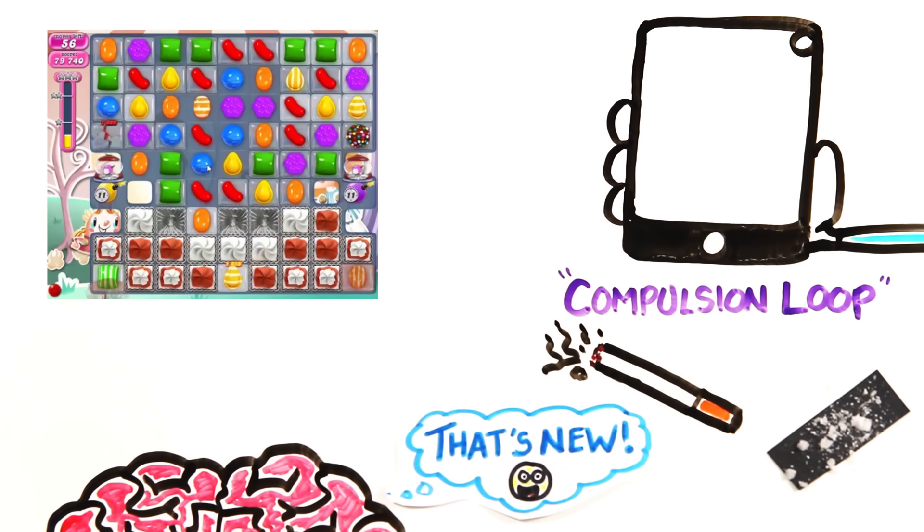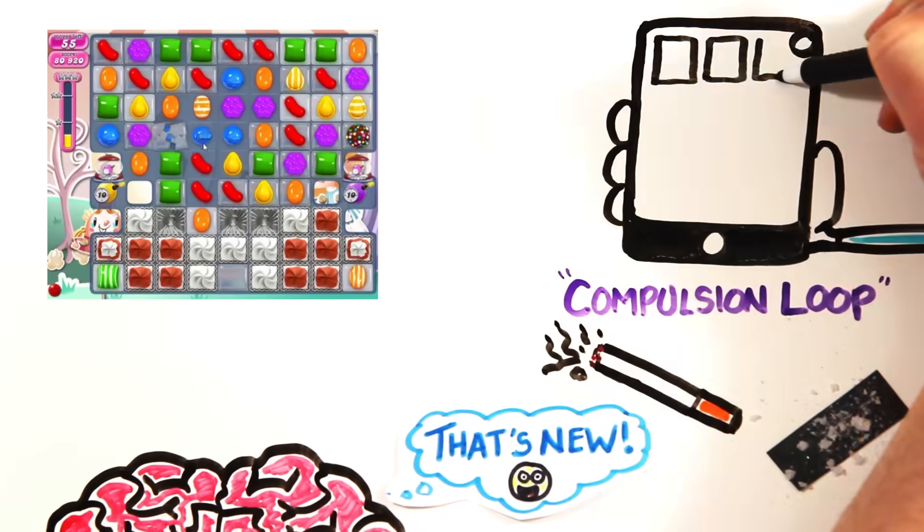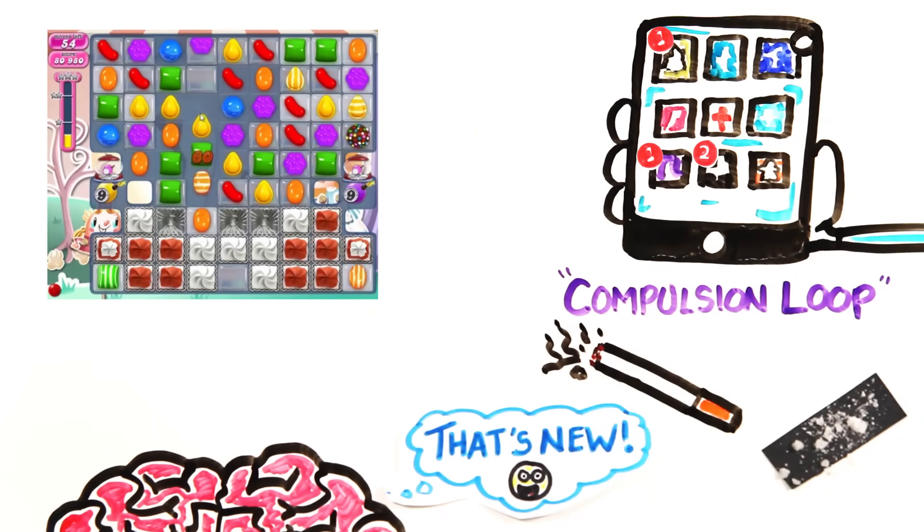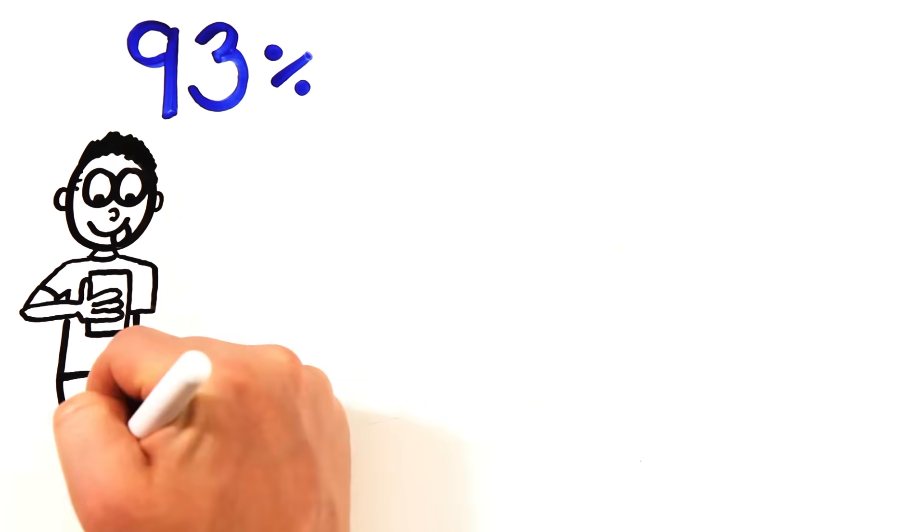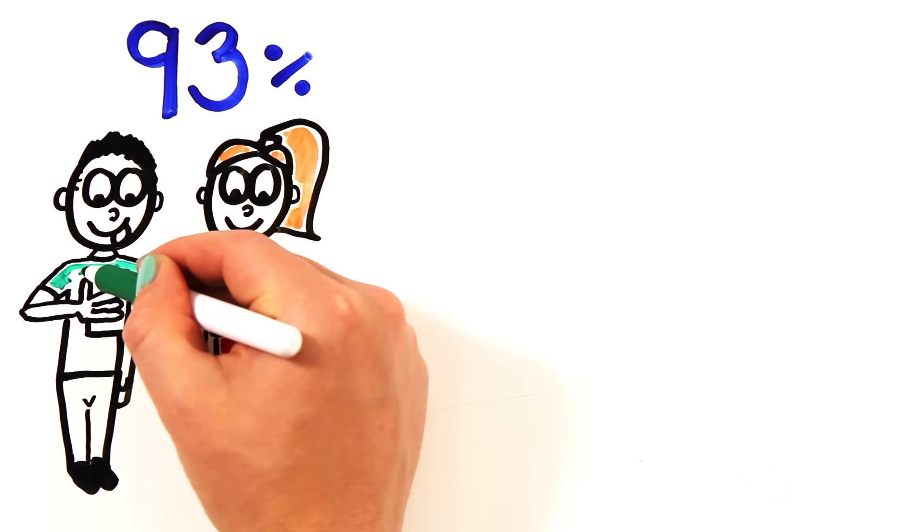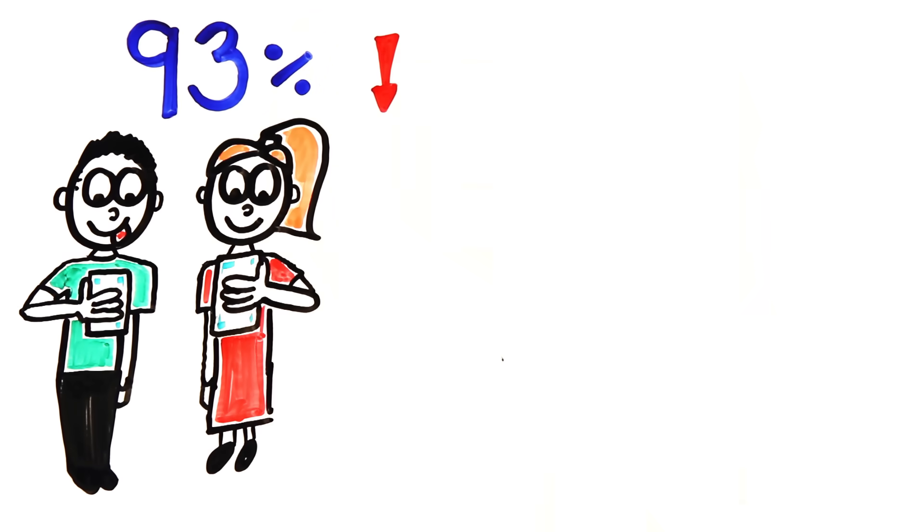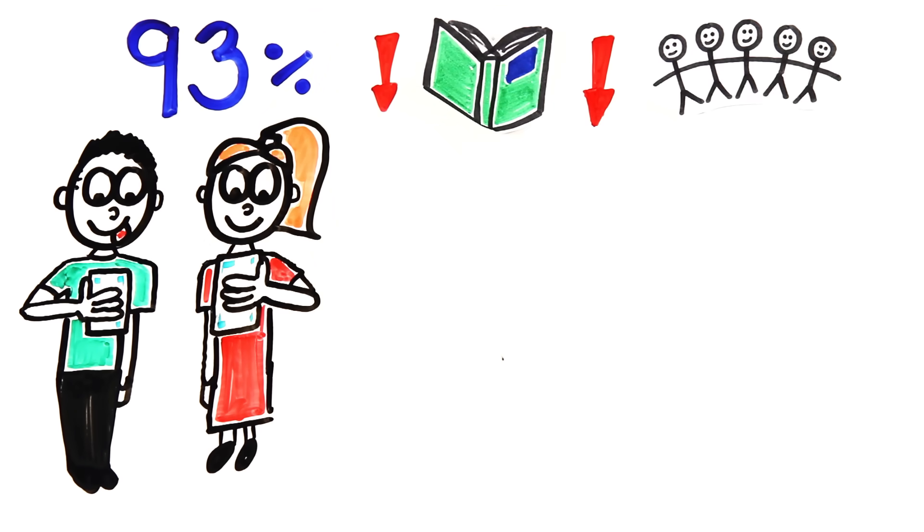Our brains are hardwired to make us novelty seeking, and this is why apps on our phones are designed to constantly provide us with new content, making them hard to put down. As a result, 93% of young people aged 18-29 report using their smartphone as a tool to avoid boredom, as opposed to other activities like reading a book or engaging with people around them.